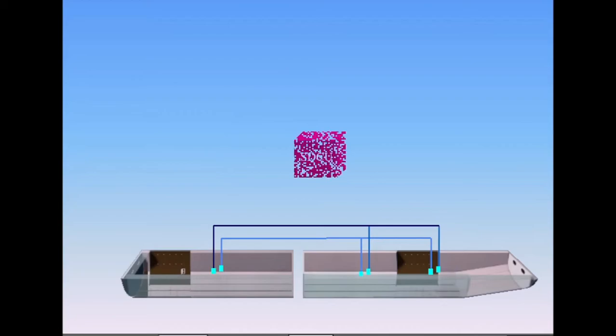The SDCU smoke detection control unit acquires signals sent by the detectors and sends them to the FWC for display in the cockpit.